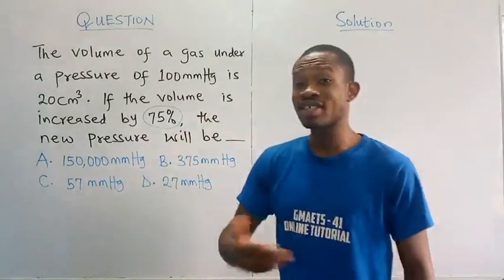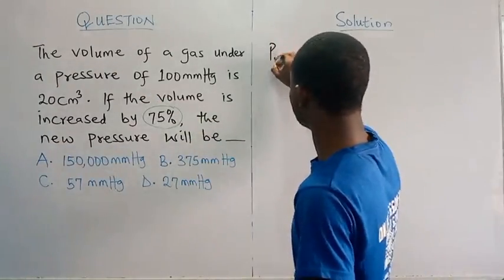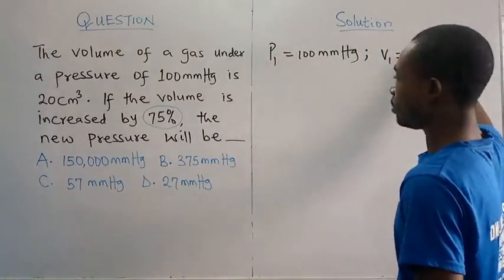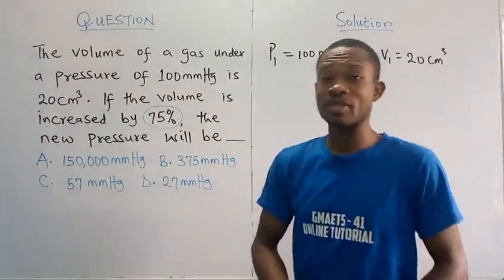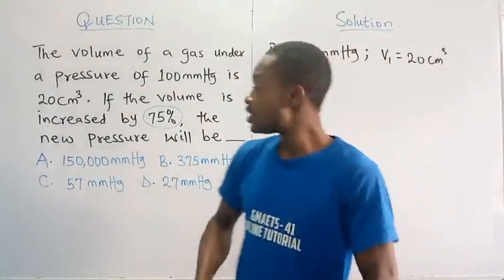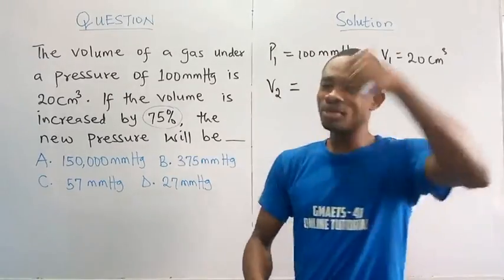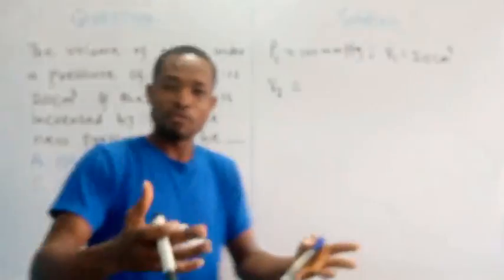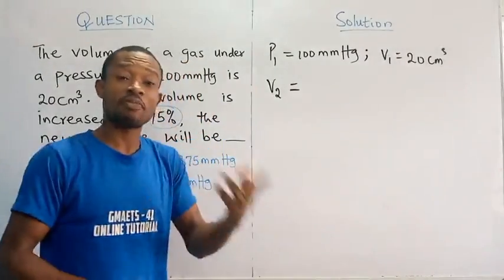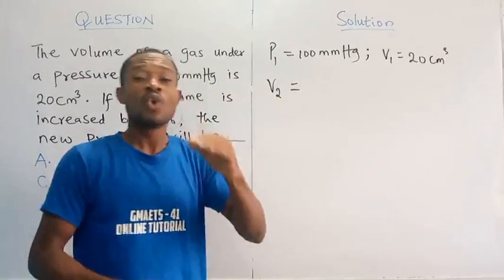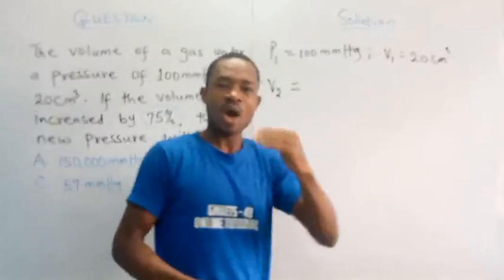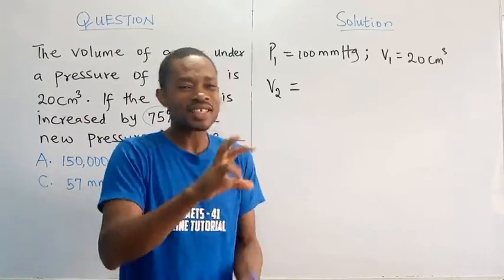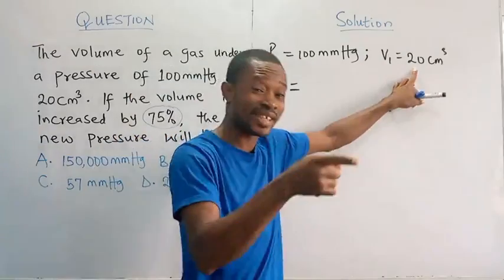Like here we are told that the volume is increased by 75%. Initially from the question you see, our initial pressure P1 is 100 mm of mercury. And then V1 is equal to 20 cubic cm. Now the question was to tell us that the volume is increased by 75%. So our V2 here will be equal to, since the final volume is obtained by increasing a previous volume by 75%, because that's the meaning of this. If the volume is increased by 75%, you must have had initial volume earlier, an original volume. It is that volume now you have to increase by 75%.